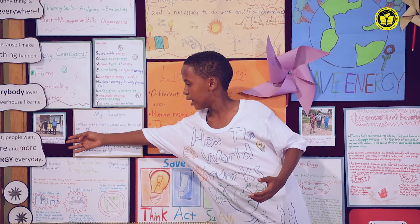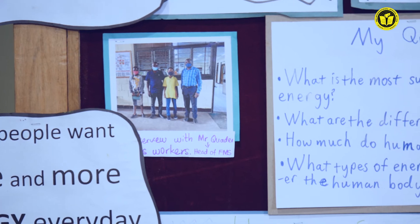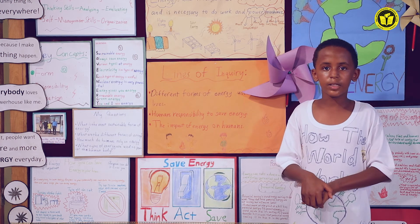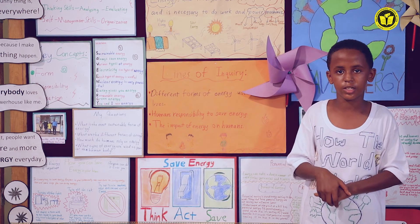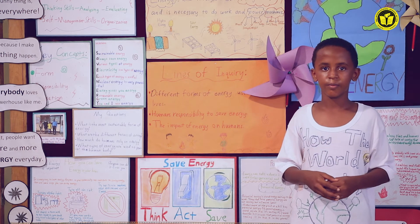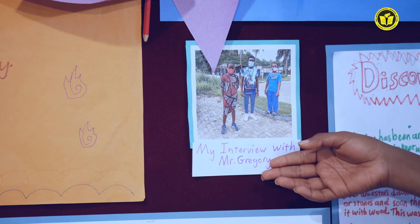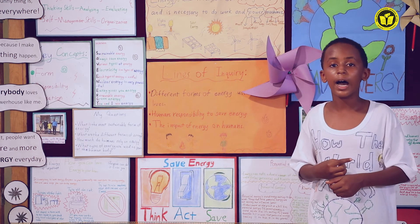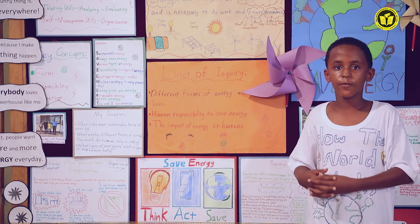During my interview with Mr. Quadra, he told me about the different forms of sustainable energy, like solar energy, wind energy, and hydro energy. He also told me about how IATA is trying to use these forms of energy to make it a more sustainable and safe place for people to live. After this interview, I interviewed two more people: Mrs. Hilde Copper and Mr. Gregory. In these two interviews, I learned about machines that consume lots of energy and how people in IATA are using waste to produce safe forms of energy.